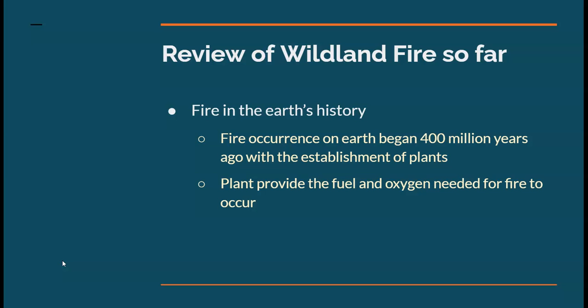Fire has been occurring on our Earth for over 400 million years. That is because 400 million years ago plants were established on Earth, and plants are going to provide both the fuel — because the fuel and that glucose molecule are in the plant tissue — and also plants gave off oxygen through photosynthesis. Those are two elements we know are needed for fire to occur, and that's why fire has been on our Earth for 400 million years or so.